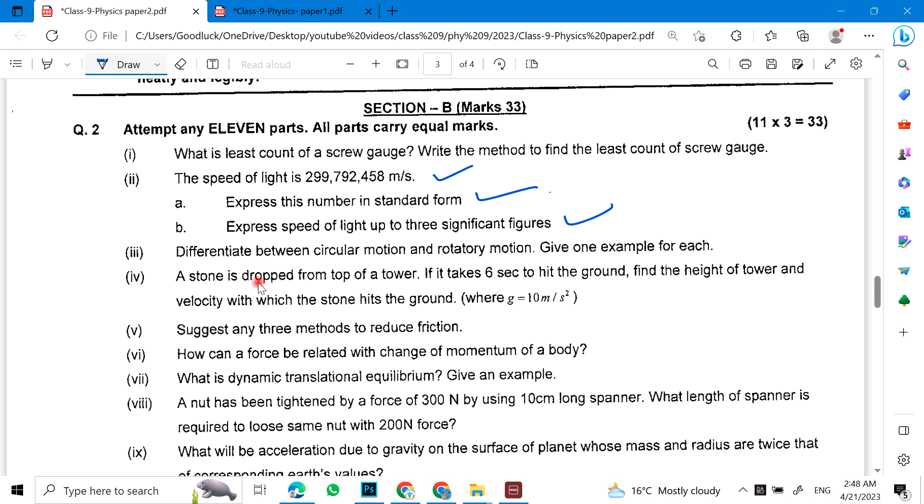Differentiate between... A stone is dropped from the height of a tower. It takes 6 seconds to hit the ground. You have a problem. State three methods to reduce friction. How can force be related with change of momentum of a body? What is dynamic translational equilibrium? Give an example.